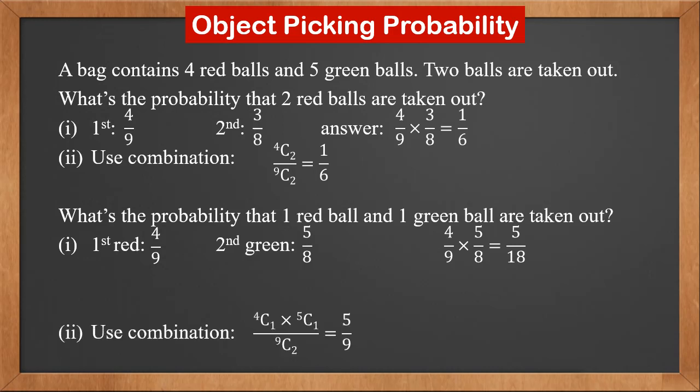If we use combination, the total number of ways is still 9C2. Selecting one red ball out of four and one green ball out of five is 4C1 times 5C1. The answer is five over nine — it is not equal to five over eighteen. What is wrong here?